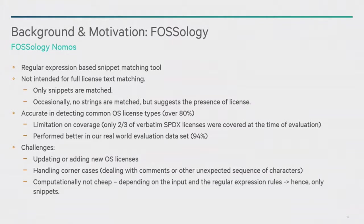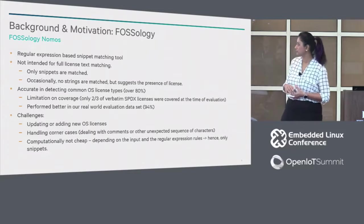We then created a real-world evaluation data set containing Qualcomm proprietary code with some files that had open source license text — sometimes with standard SPDX licenses, sometimes with non-SPDX licenses. Nomos did pretty well, catching about 94% of the open source licenses in our real-world evaluation set. The challenges we found with Nomos are around adding new licenses — you need to add a new regex rule and recompile the underlying C library. Handling corner cases is also difficult since it's a regex-based tool, and computationally regex is not cheap, so the Nomos team didn't account for all diversions from standard license patterns.